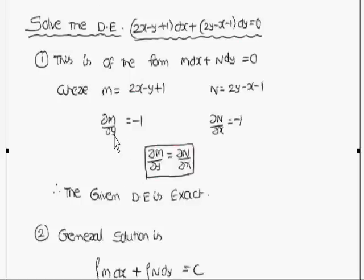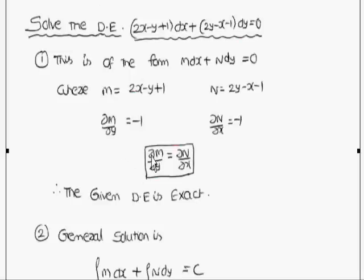Computing ∂M/∂y gives −1, and ∂N/∂x also gives −1. When differentiating with respect to y, x is treated as constant, and vice versa. Since ∂M/∂y = ∂N/∂x, the given differential equation is an exact differential equation.